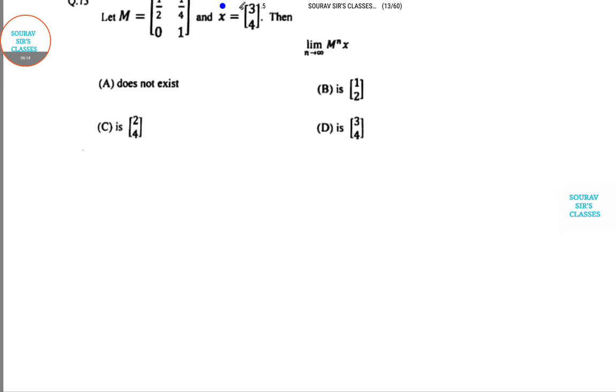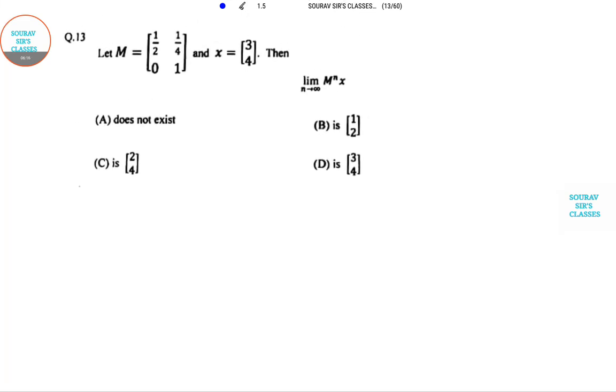Next one is on the basis of limits. Matrix M is given, X is given, and they have found limit M^N as N approaches infinity. This is the tricky part of the question. You remember that whenever this kind of stuff is given, we need to find M², M³ and check the pattern. I am not going to solve those portions in detail.